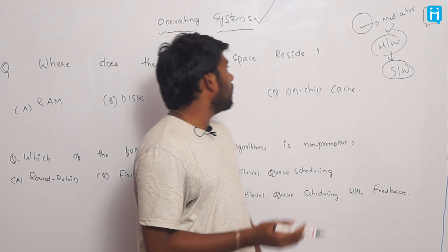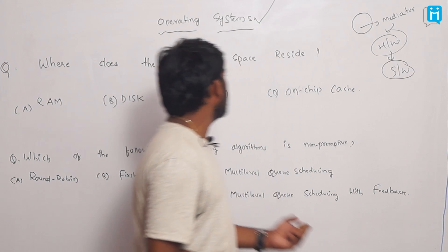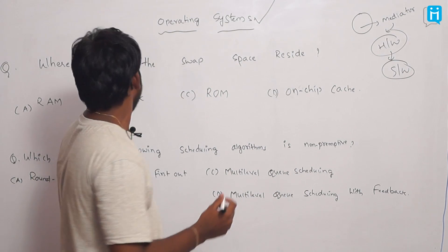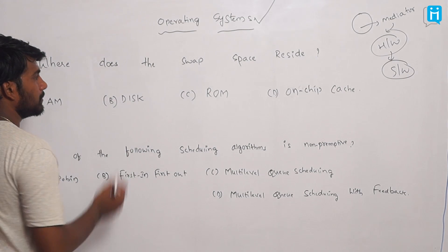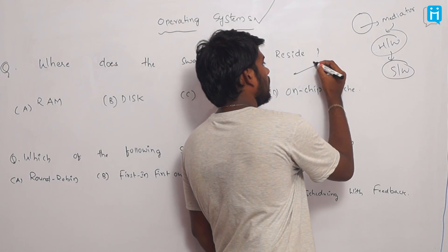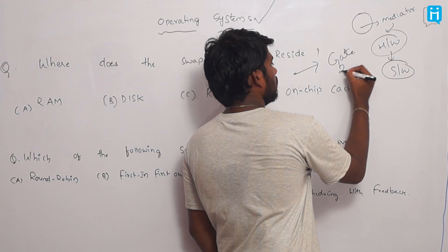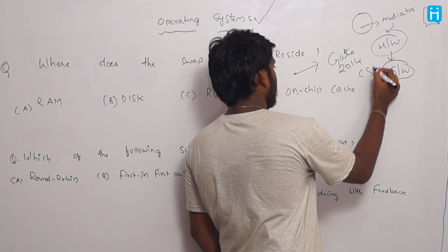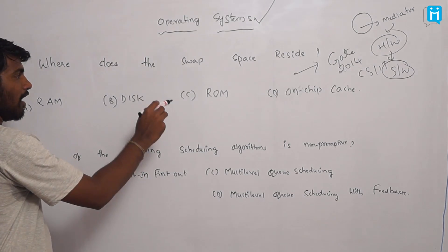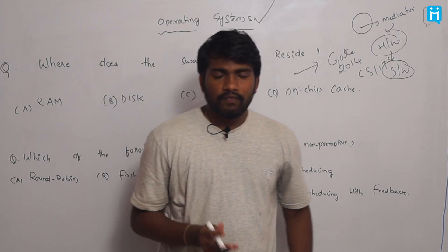The process of managing hardware to software is done by using the operating system. We will learn more about operating systems in later videos. Now here we have a few questions asked in GATE operating systems. The first question: where does the swap space reside? This question has been asked in GATE 2014 Computer Science and IT.